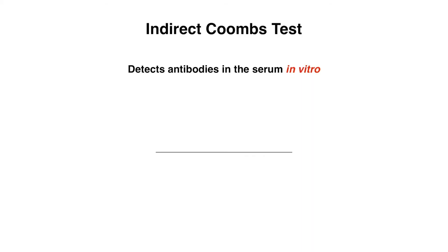Let's now contrast this with the indirect Coombs test, which is detecting antibodies in the serum rather than antibodies already bound to the RBC surface. The indirect Coombs test is usually done as a screening procedure in order to find antibodies that have the potential to cause a hemolytic reaction — a test we do before anything even takes place in order to hopefully prevent something from happening. Think of this test as more of a preventative test rather than a diagnostic one.